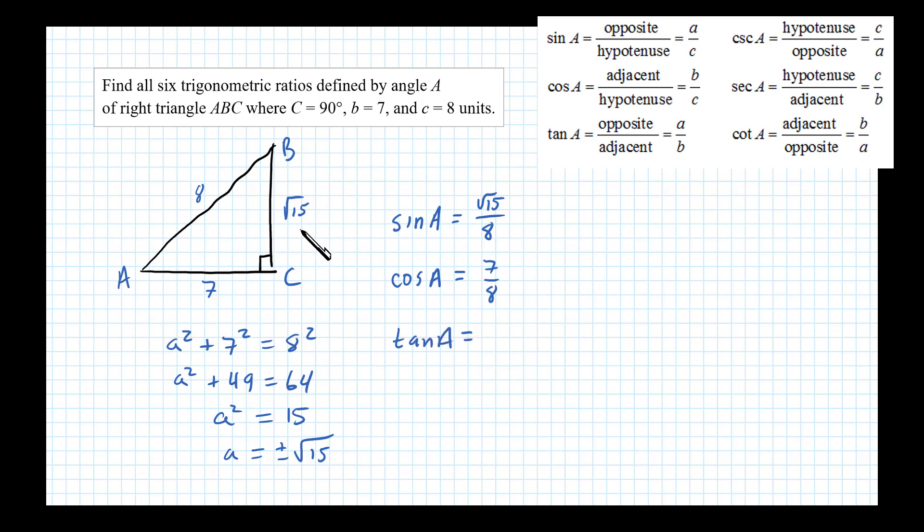So opposite over adjacent, we have square root of 15 over 7.